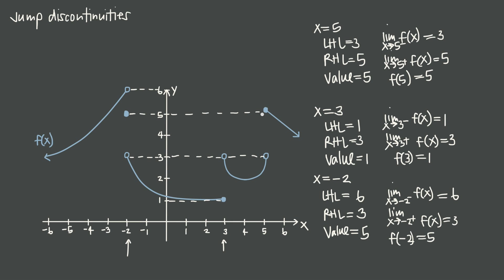So that's what we're talking about when we discuss jump discontinuities — big breaks in the graph that are not at vertical asymptotes. When we have a jump discontinuity, what we're interested in is the left-hand limit, the right-hand limit, and the value of the function at each jump discontinuity.